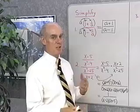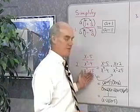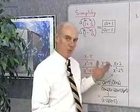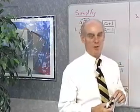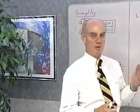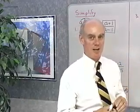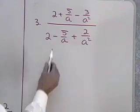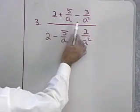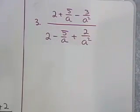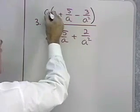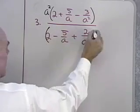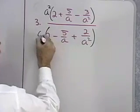In this case, it was easier to think of it in terms of division and then multiply by the reciprocal. Let's look at another example in which we multiply the numerator and denominator by the least common denominator again. If I check all the small fractions here, I'll see my least common denominator is a squared, so I'm going to multiply this numerator and this denominator by a squared.